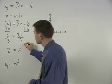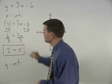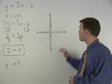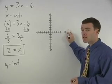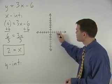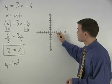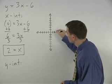So our x-intercept is 2, which means that our line crosses the x-axis 2 units to the right of the origin, or at the point (2, 0).